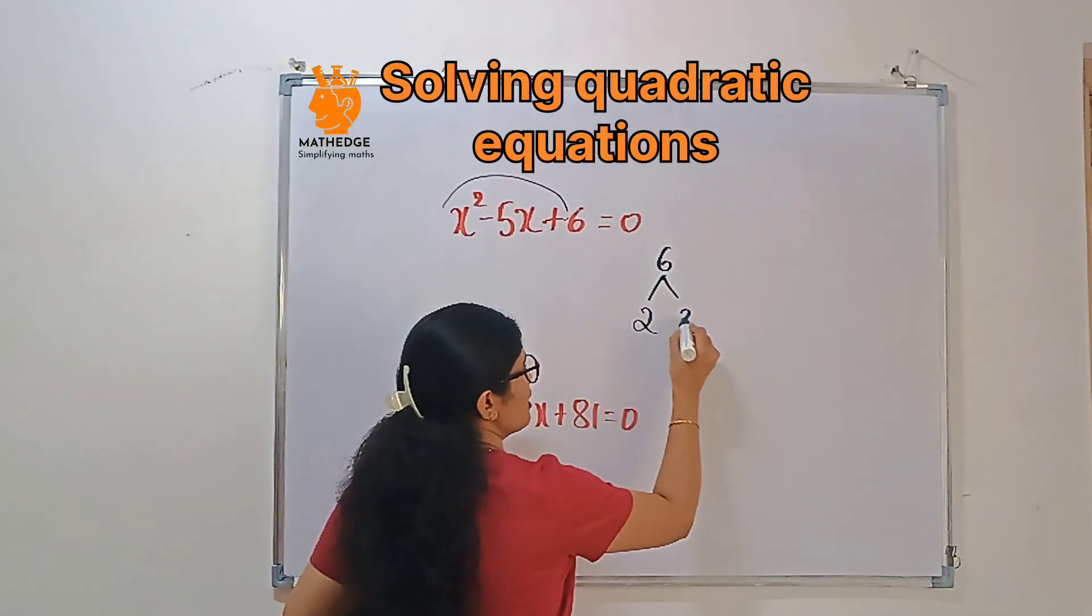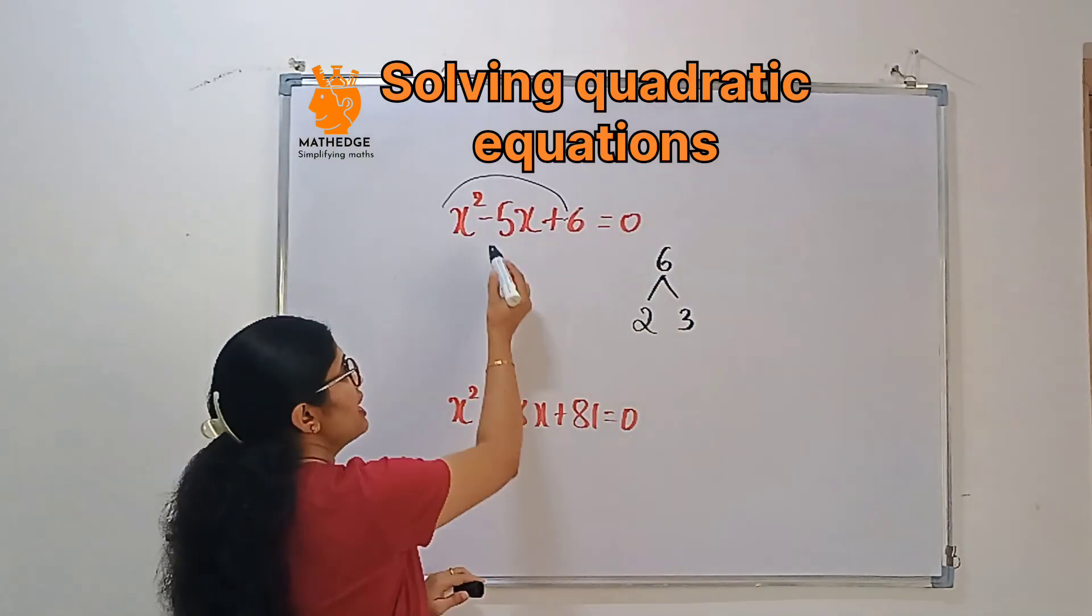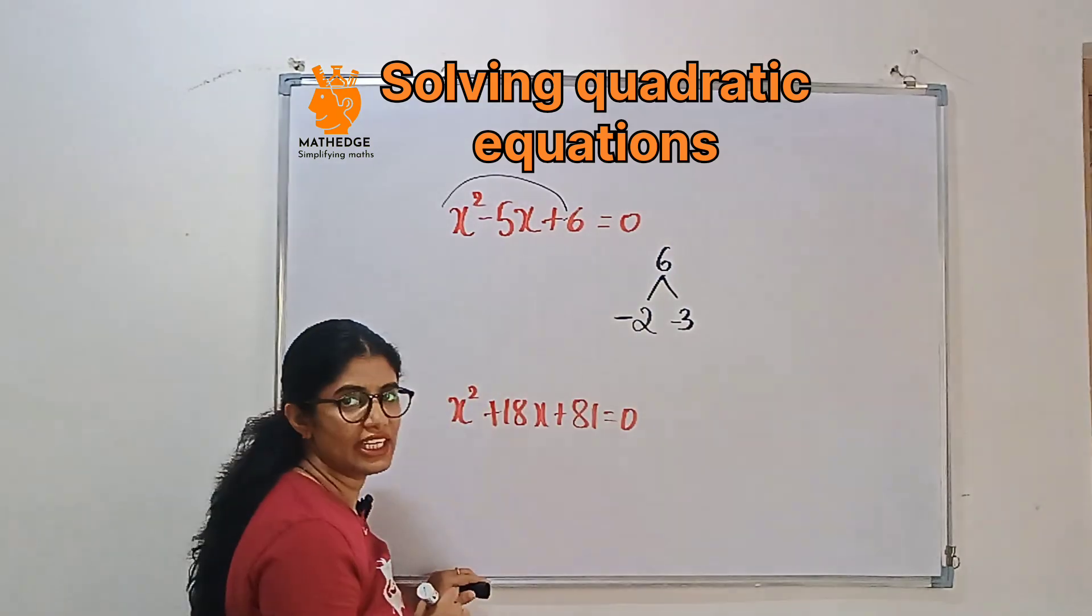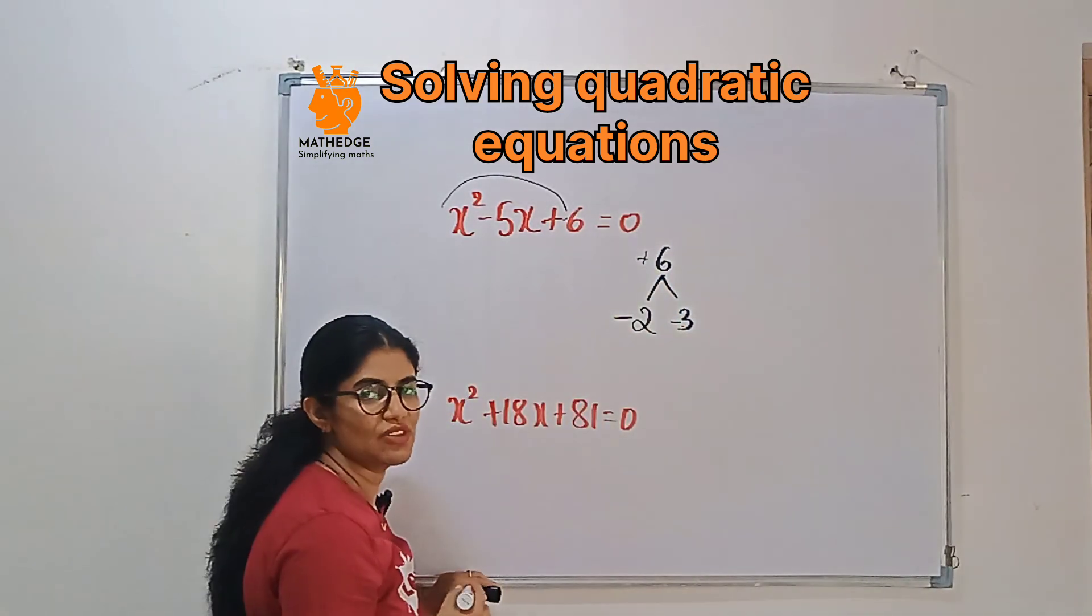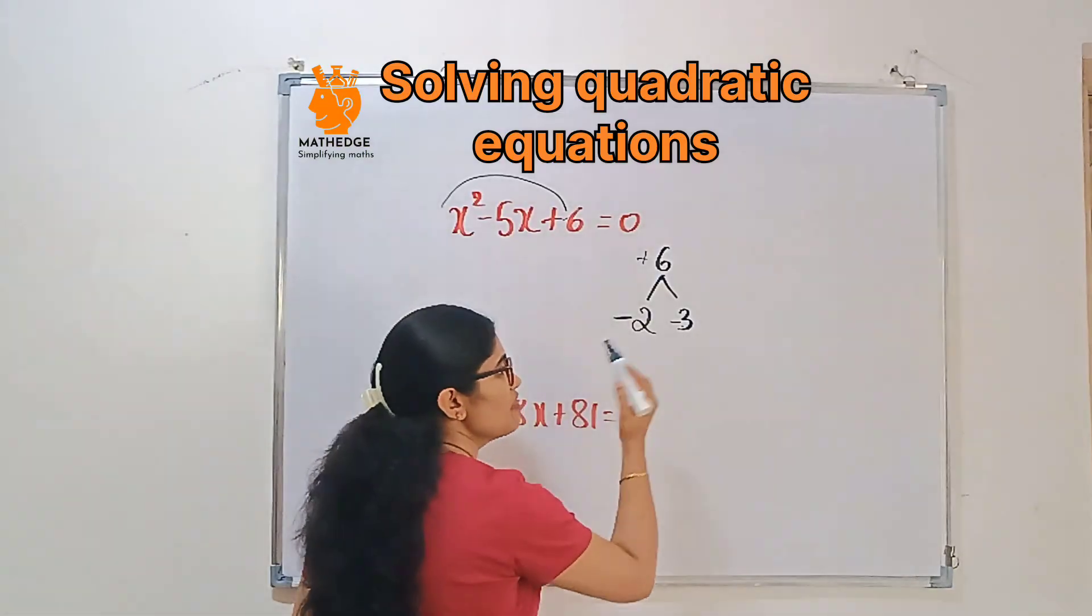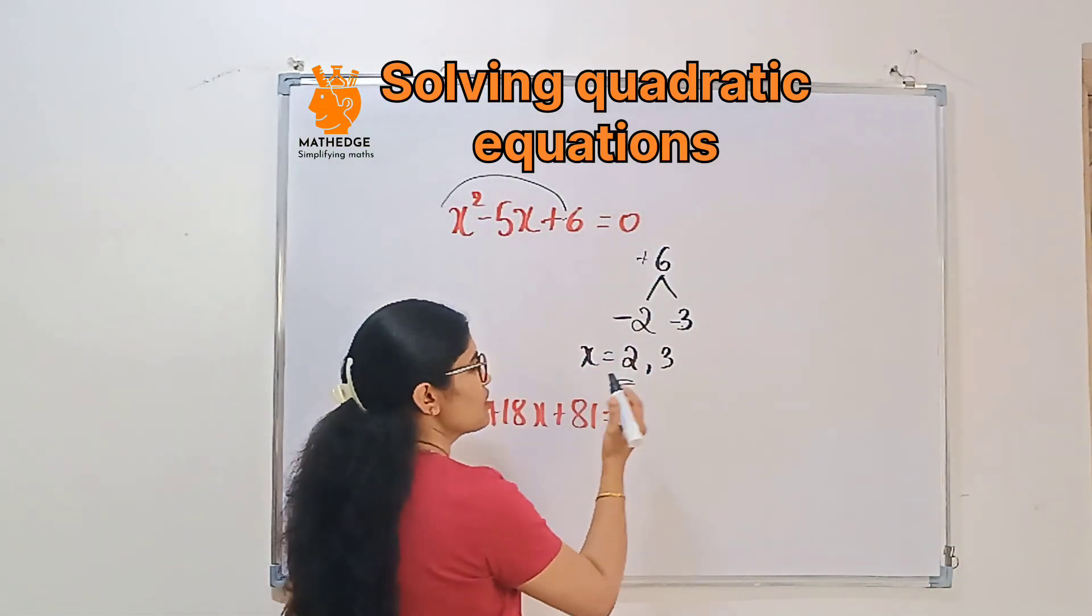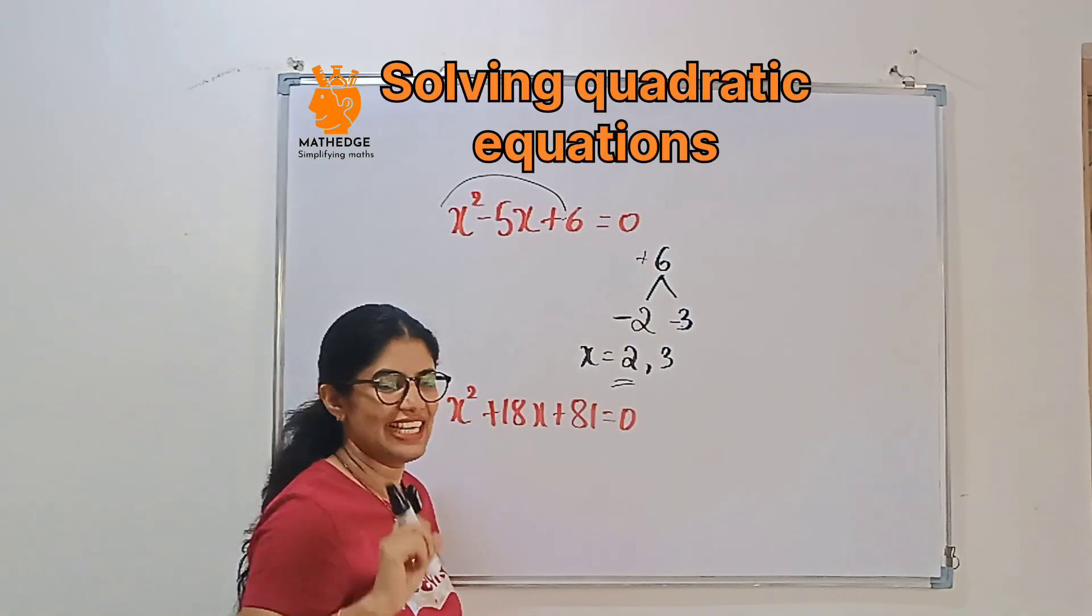So can I consider 2 and 3? If I add 2 and 3, we get 5. But here we have a minus 5. In that case, for both the terms, we should get negative and negative. Minus into minus is plus. So this satisfies. After that, just reverse the sign. Then x is equal to 2, then x is equal to 3. So these are our roots. We can cross check by doing a factorization method. Is it right? Yes.